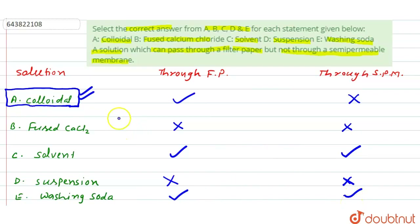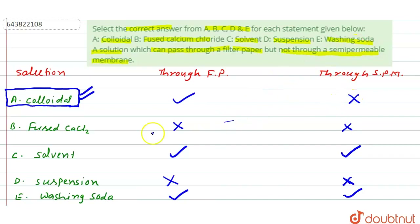So the question asks for a solution that can pass through filter paper — yes — but not through a semi-permeable membrane. The answer is option A, that is colloidal solution. The answer of this question is colloidal solution.